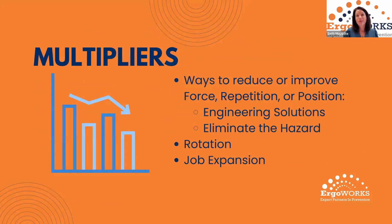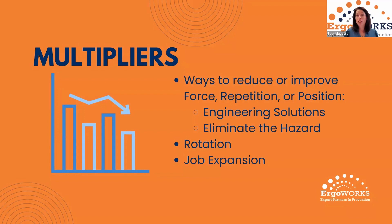For multipliers, always look for ways to reduce or improve force, repetition, or position — whether through engineering solutions or eliminating the hazard entirely. Sometimes you can address this through job rotation: rotating employees from a standing to a seated position, or from a fine motor task to a gross motor task throughout their workday. Job expansion means incorporating more areas into the work — so instead of just rotating to the shipping department, maybe that becomes part of their position as well.